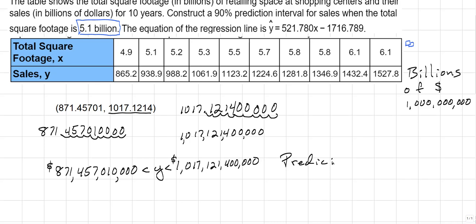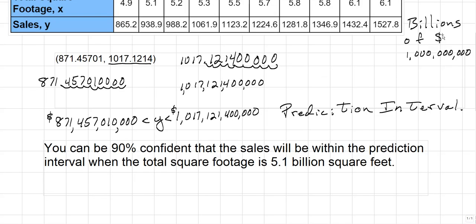What does that mean in the grand scheme of things? It means that you can be 90% confident that the sales will be within the prediction interval when the total square footage is 5.1 billion square feet.